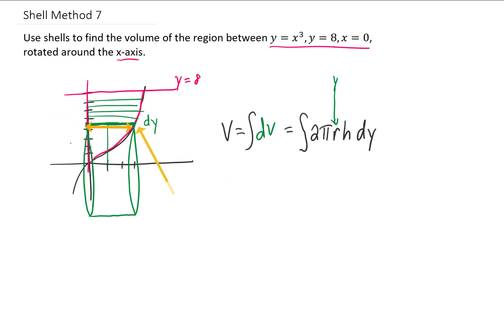The height of each one of these shells is given by the function y equals x cubed. But we need an integral in terms of y, so we're going to solve y equals x cubed for x by taking a cube root of both sides. So our height is going to be y to the 1/3 power.